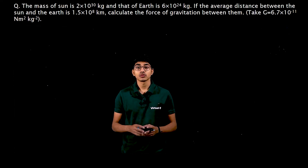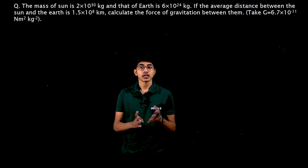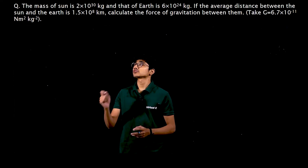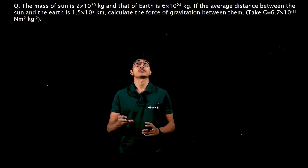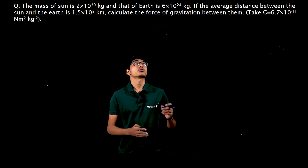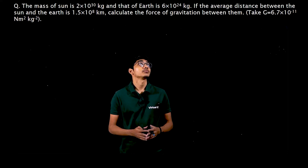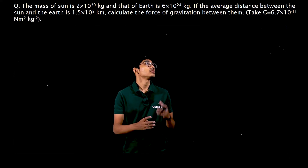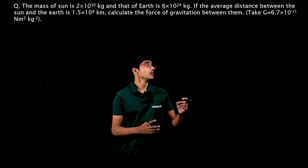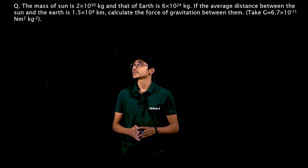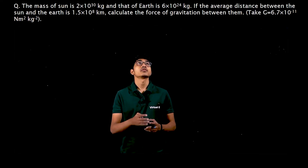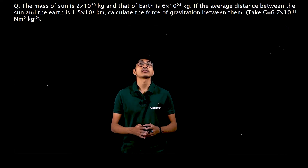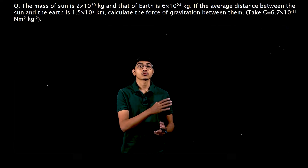Now let's try to solve the question using the force of gravitation. In this question we have mass of sun is 2 into 10 raise to 30 kilograms and that of earth is 6 into 10 raise to 24 kilograms. If average distance between sun and earth is 1.5 into 10 raise to 8 kilometers, calculate the force of gravitation between them. Take the universal gravitation constant G as 6.67 into 10 raise to minus 11 newton meter square per kg square.